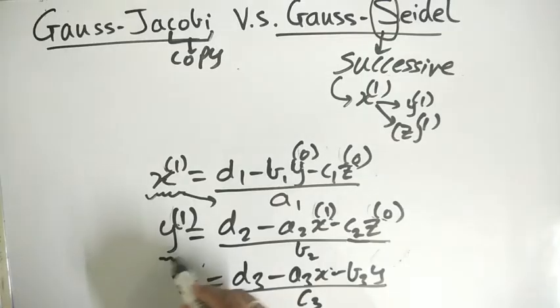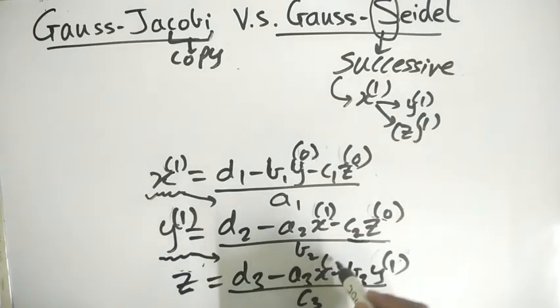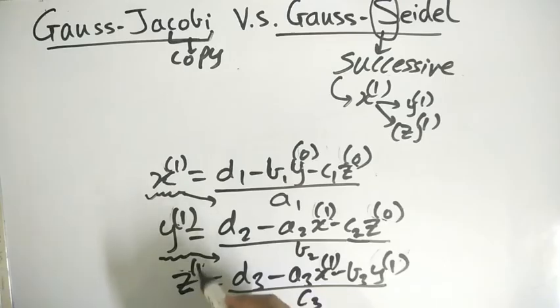Again, we get a new value of y1, so put it here. Why use the old values when we have the new values? And x1 also here, because we have the new values. Then this will be z1.